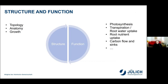So what do we actually mean by structure and function? These two aspects of a functional structural plant model interact with each other. Under structure, we understand the plant topology, the anatomy, and its temporal development — the growth. By function, we mean photosynthesis, transpiration, water uptake, nutrient uptake, carbon flow within the plant, and its distribution towards different organs.